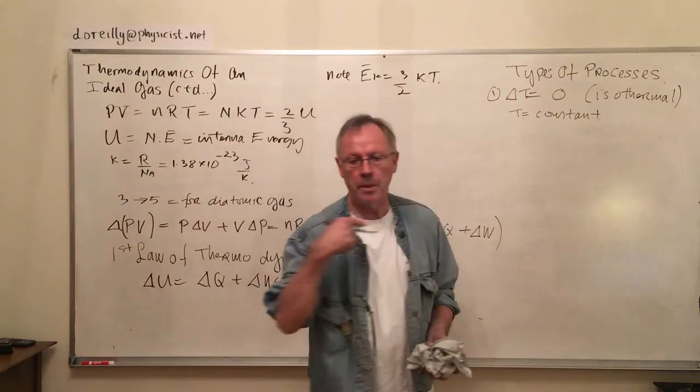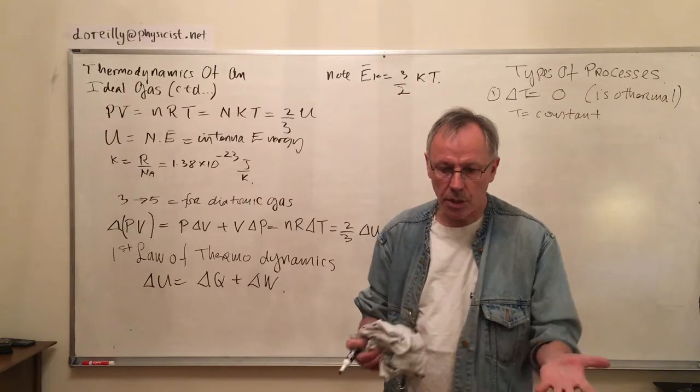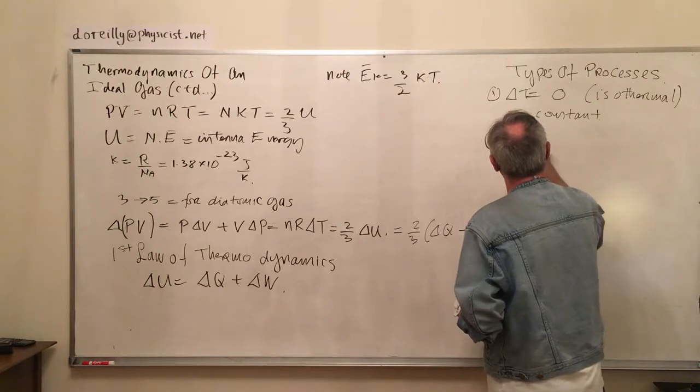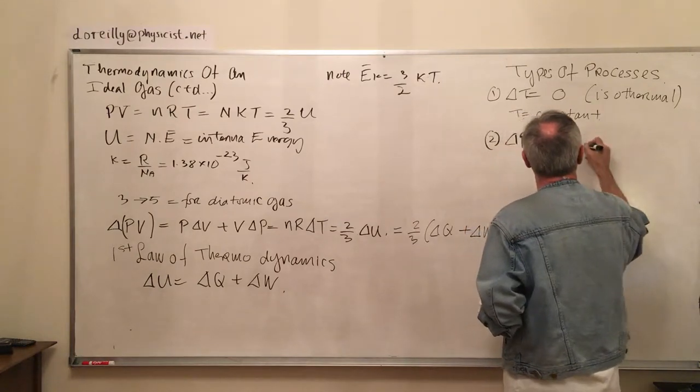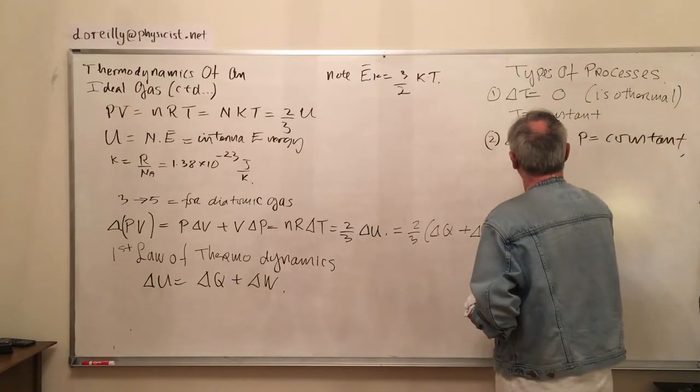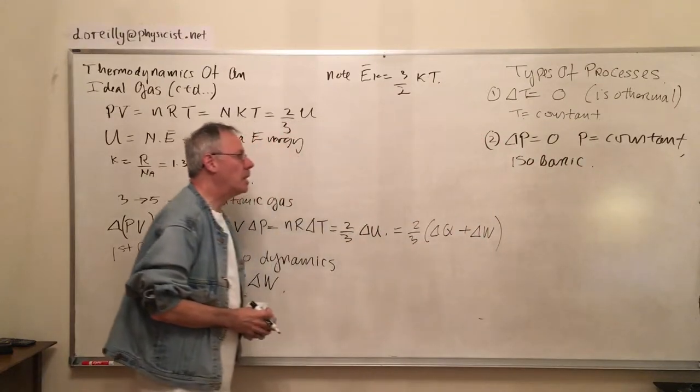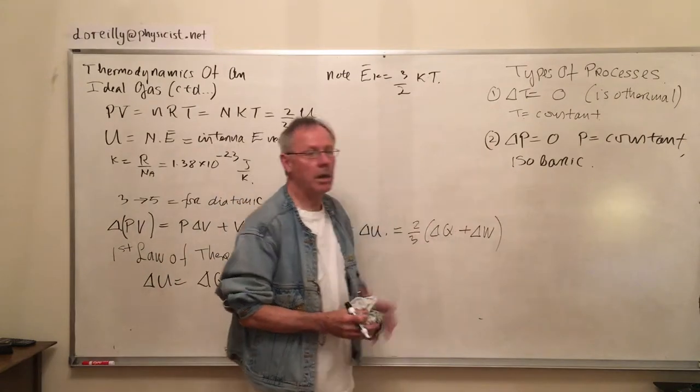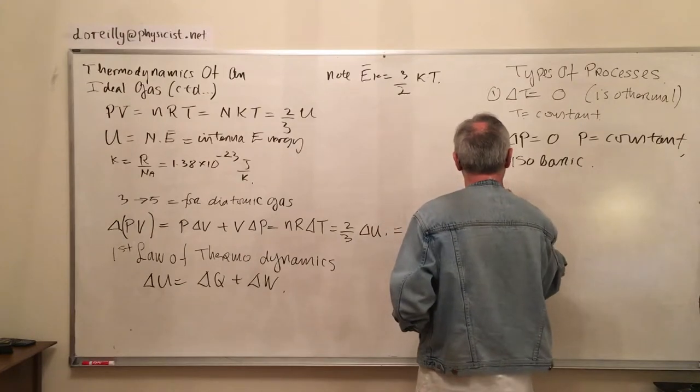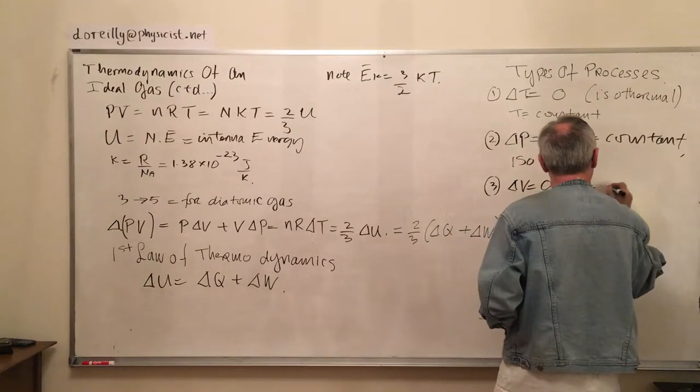The next one: set P equals a constant, delta P equals zero, and it's called isobaric.